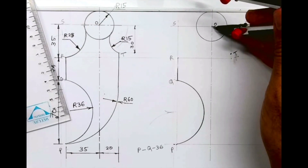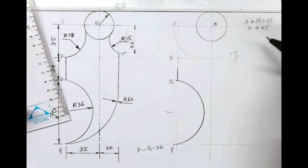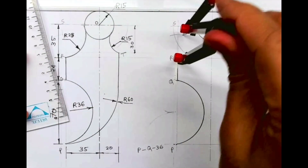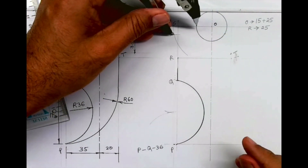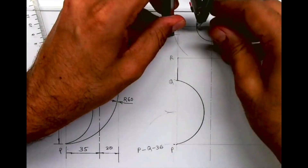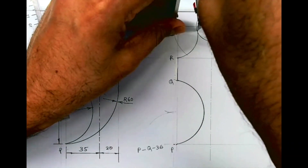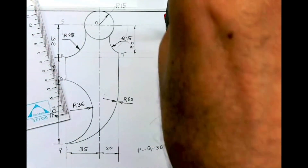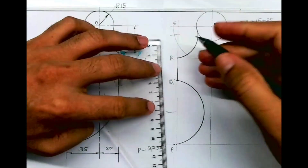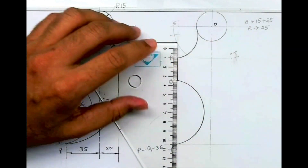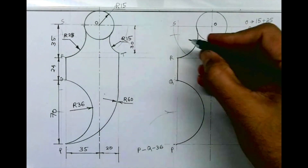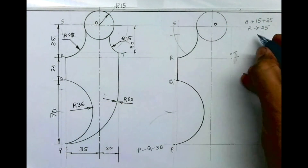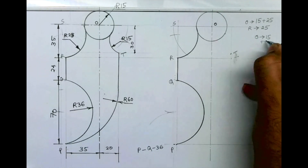For radius 25, from O I will cut 40 and from R I will cut 25. From that point you draw radius 25. Now to draw radius 15, from O we will cut 15 plus 15.